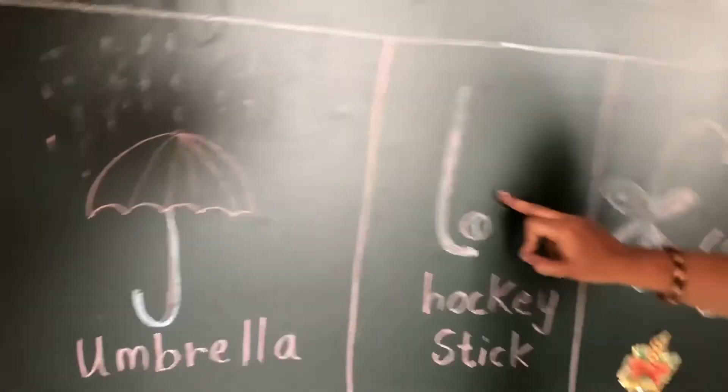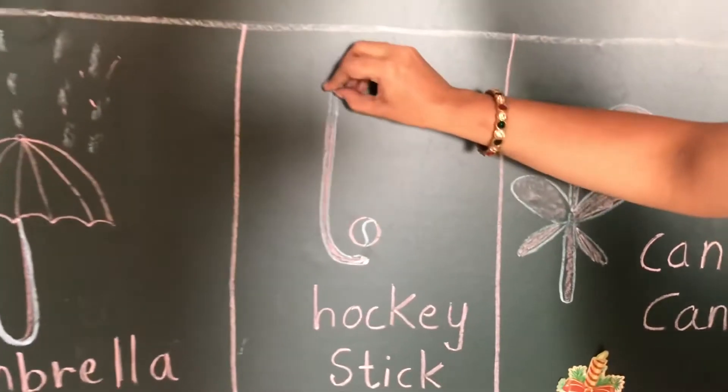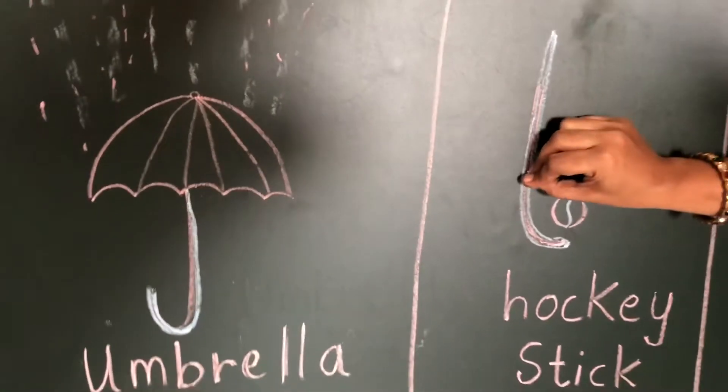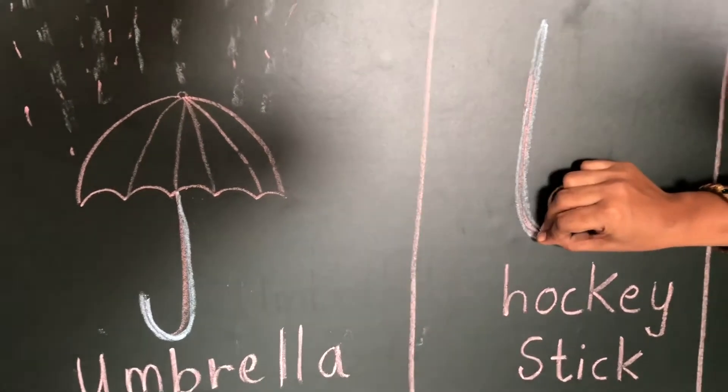Now what is this? This is the hockey stick. See, it is coming from the top. It is coming down and it is taking a turn.